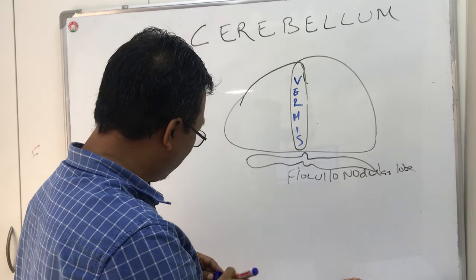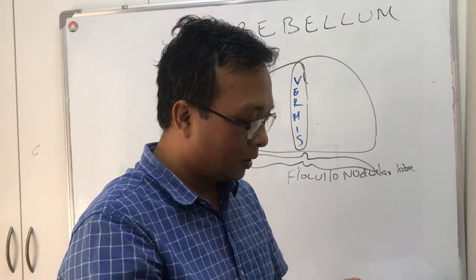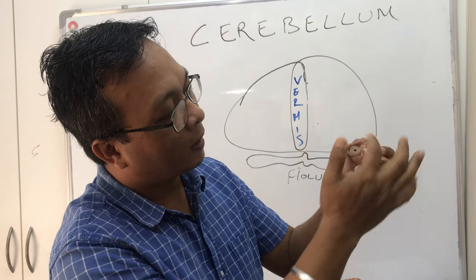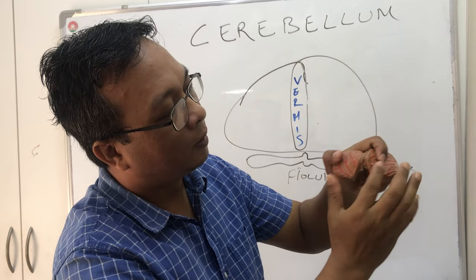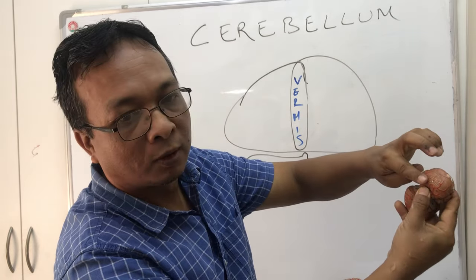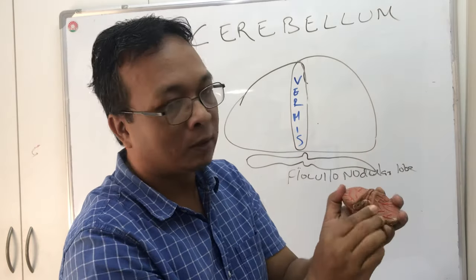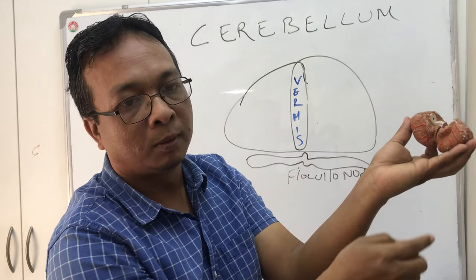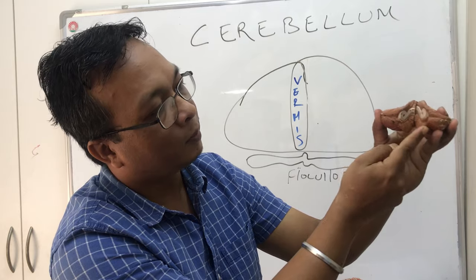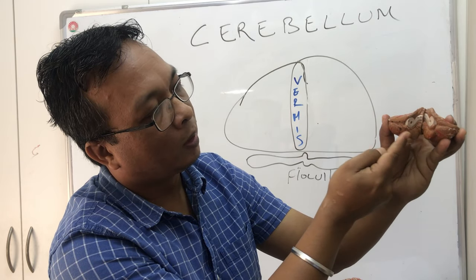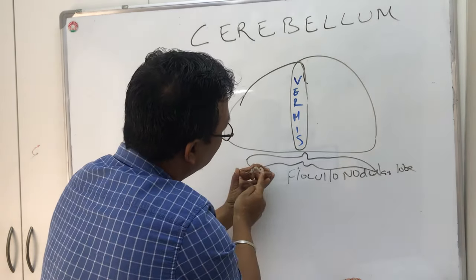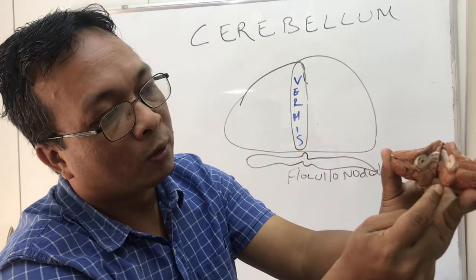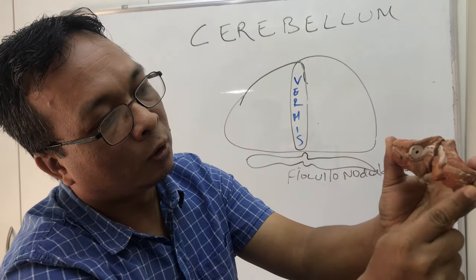Anatomically, the cerebellum is divided into lobes. This is the anterior lobe, and there is the posterior lobe below. The middle part is called the vermis, and this part is called the flocculonodular lobe. So anatomically: anterior lobe, posterior lobe, and flocculonodular lobe.